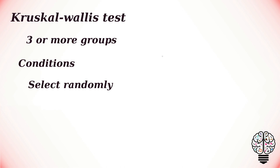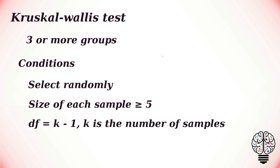Each sample must be randomly selected and the size of each sample must be at least five. If these conditions are met, the test is approximated by a chi-square distribution with k-1 degrees of freedom where k is the number of samples.